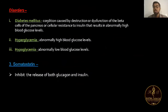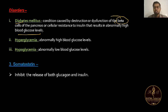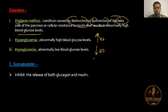Regarding disorders: the first disorder is diabetes mellitus, caused by destruction and dysfunction of the beta cells of the pancreas, resulting in abnormally high blood glucose levels. The second is hyperglycemia — abnormally high blood glucose level. When blood glucose is low, it is called hypoglycemia.